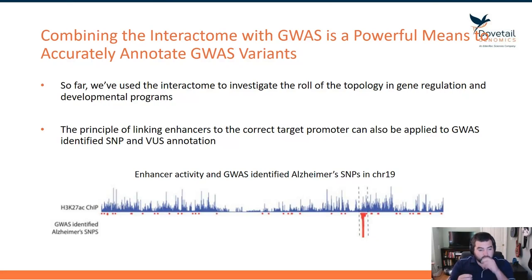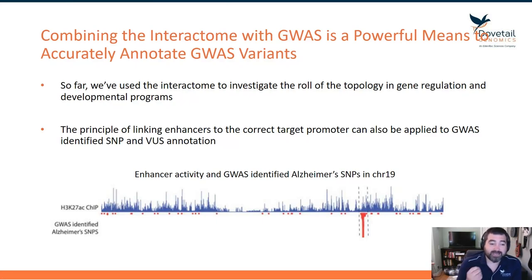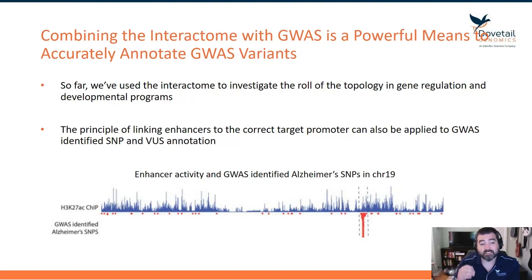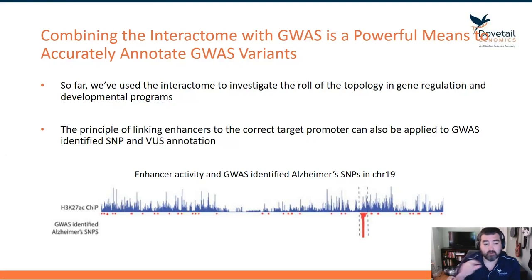What we're going to do is take NSC ChIP-seq and Hi-CHIP data for enhancers along with GWAS-identified Alzheimer's SNPs. In the blue coverage plotted here, that's enhancer ChIP-seq coverage across chromosome 19. Below that in red are the positions of Alzheimer's-associated SNPs.